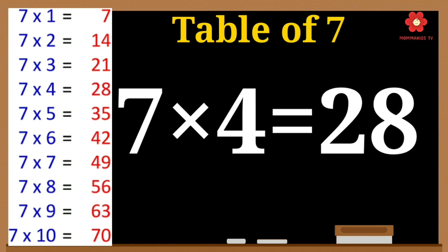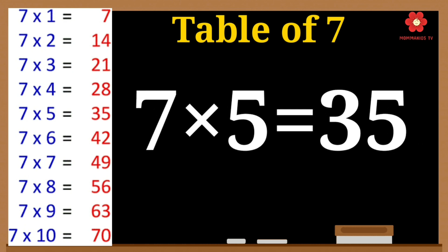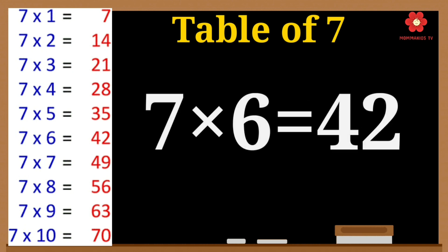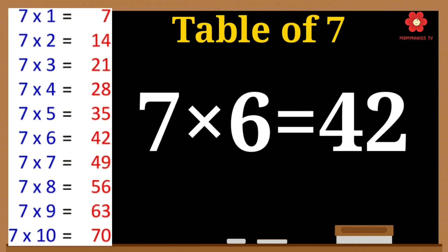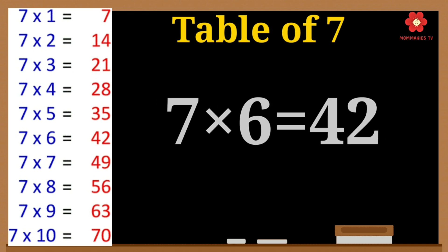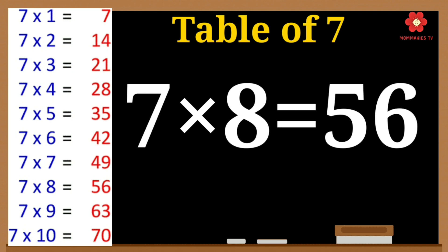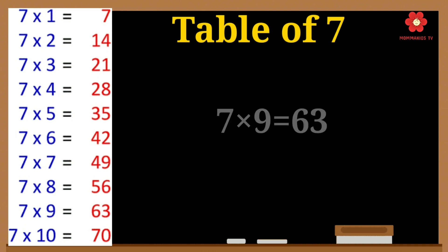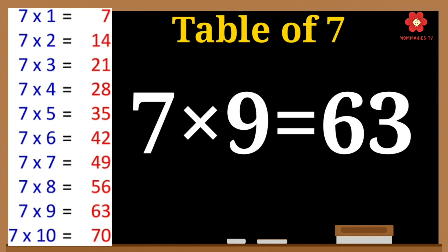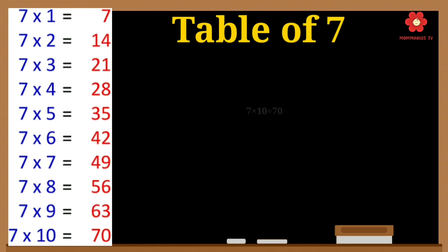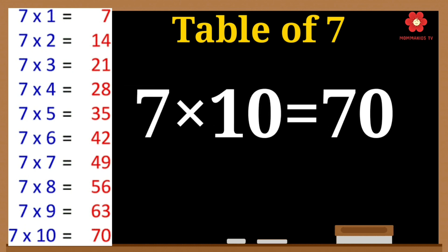7 4's are 28. 7 4's are 28. 7 5's are 35. 7 5's are 35. 7 6's are 42. 7 6's are 42. 7 7's are 49. 7 8's are 56. 7 9's are 63. 7 10's are 70.